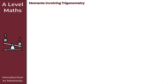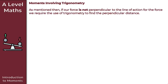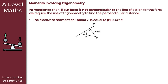Let's look at moments involving trigonometry. If our force is not perpendicular to the line of action, we require trigonometry to find the perpendicular distance. As we can see from the diagram, the distance here is not perpendicular, so the clockwise moment of force F about P equals the magnitude of F times D sin θ.